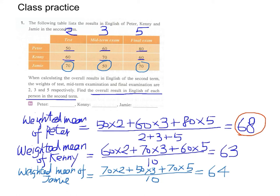And we can check this out. The final exam has the greatest weight of 5. So we can see that Peter has the highest mark, 80 marks. He scored the highest mark in the final exam. So since this part accounts for a greater weight of the final mark, Peter's weighted mean will be greater than that of Candy and Jamie because they score lower marks in the final exam.